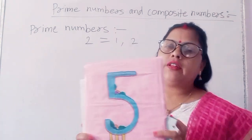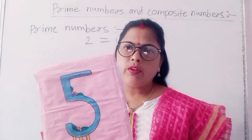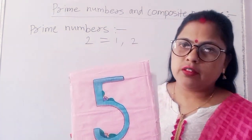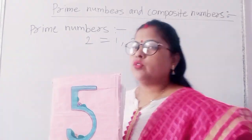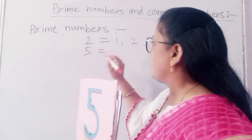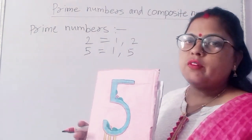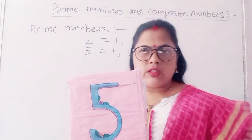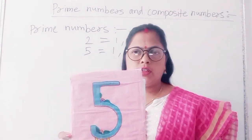Here I have taken 5. Is 5 a prime number or composite? First I will find the factor of 5. The factor of 5 is 1 and 5, which means 5 has only 2 factors. So 5 is a prime number.